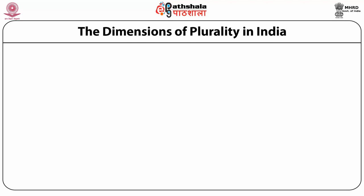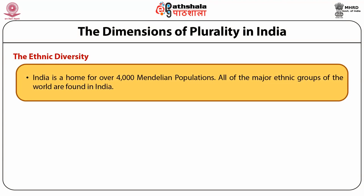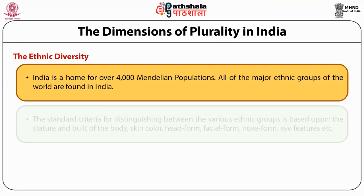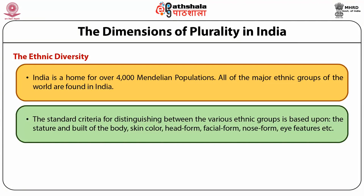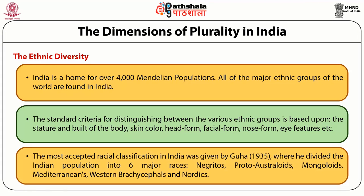India is a home for over 4,000 Mendelian populations. All of the major ethnic groups of the world are found in India. The standard criteria for distinguishing between various ethnic groups is based upon the stature and build of the body, skin color, head form, facial form, nose form, eye features, etc. The most accepted racial classification in India was given by B.S. Guha in 1935, where he divided the Indian population into six major races: Negrito, Proto-Australoid, Mongoloid, Mediterranean, Western Brachycephalic and Nordic.